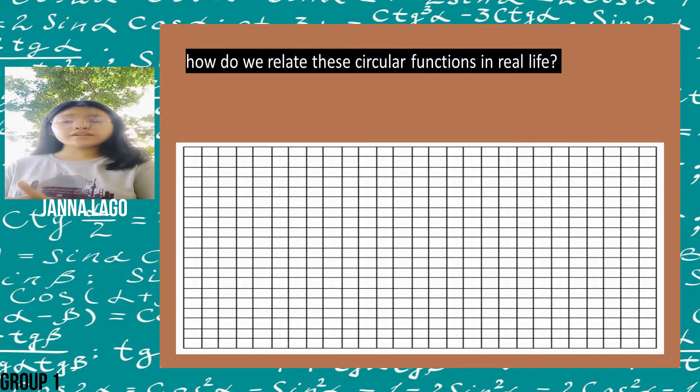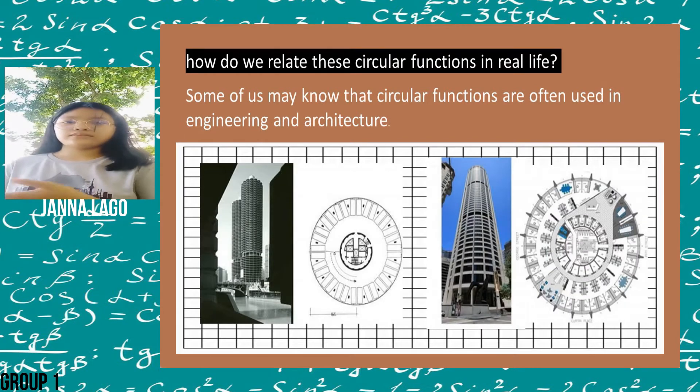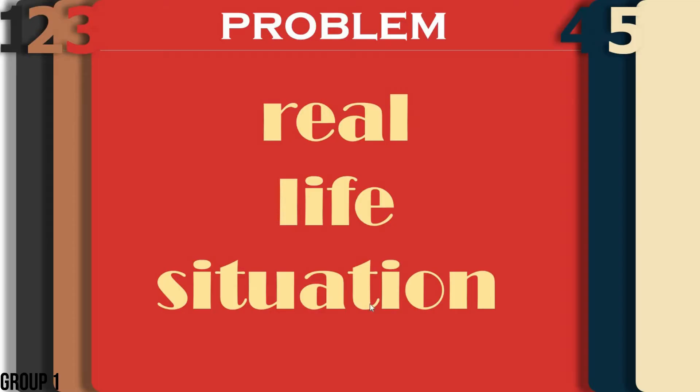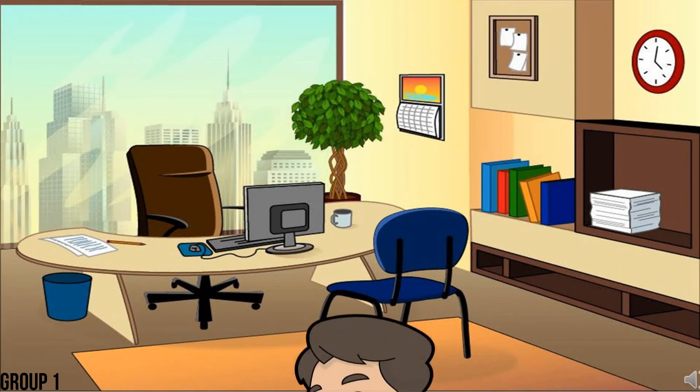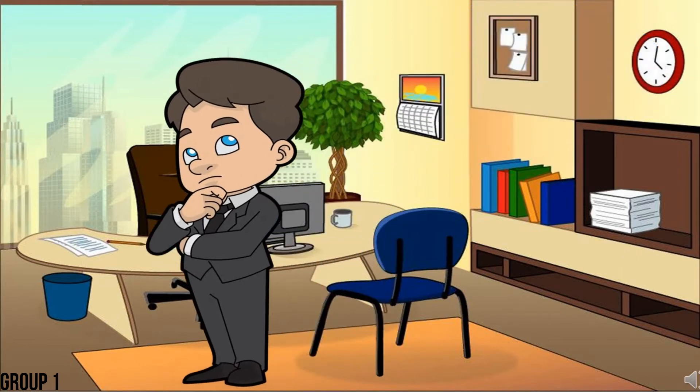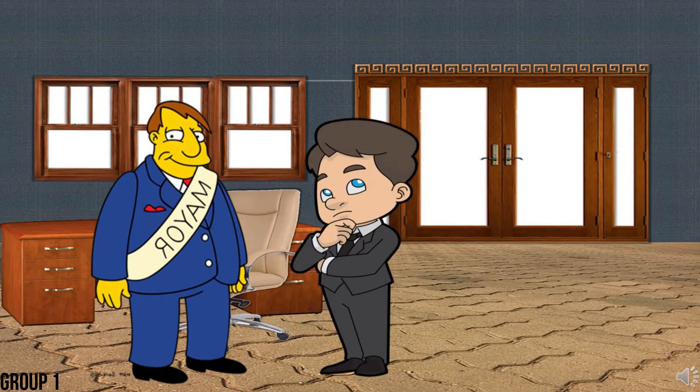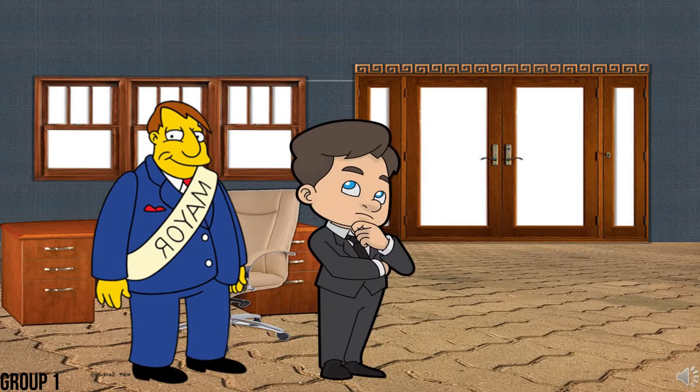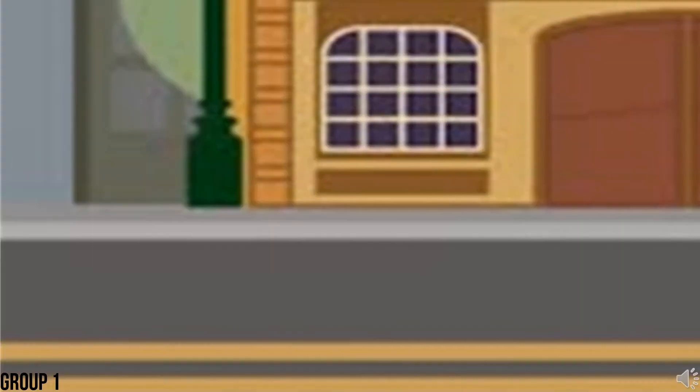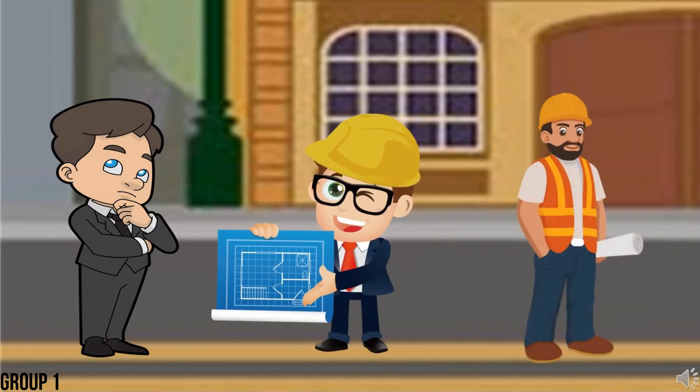How do we relate the circular functions in real life? Some of us may know that circular functions are often used in engineering and architecture. The head of UN TV television wanted to build a building around Quezon City. The company asked the city mayor if they were allowed to build such a thing. After applying to the city ordinance, the construction went through. With the coordination of the engineers and the construction workers, this building came to life.